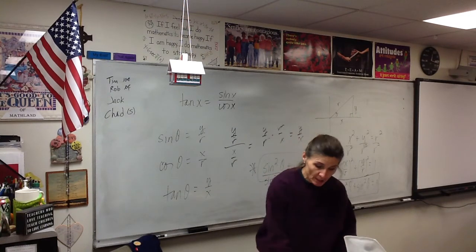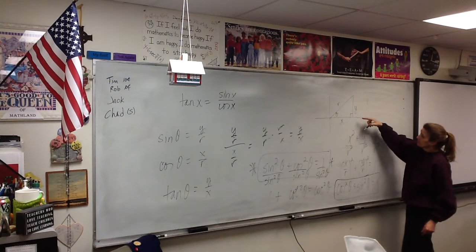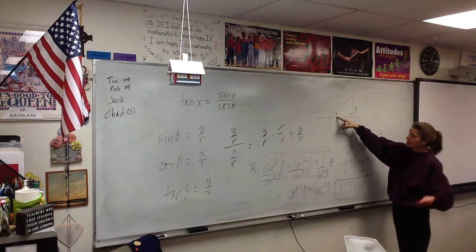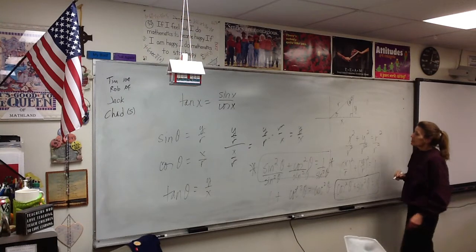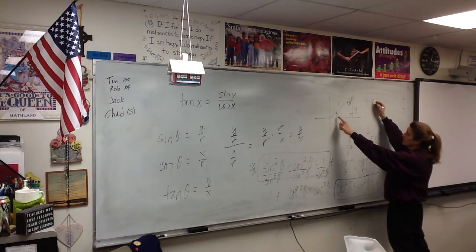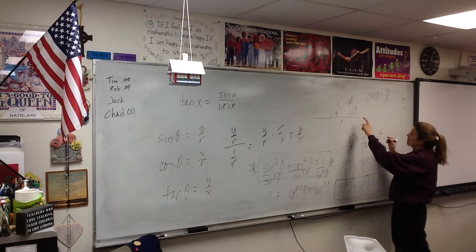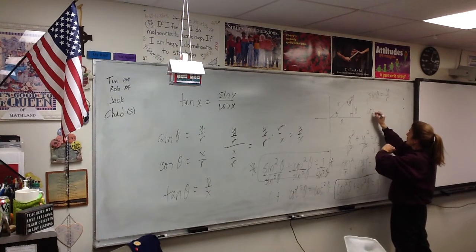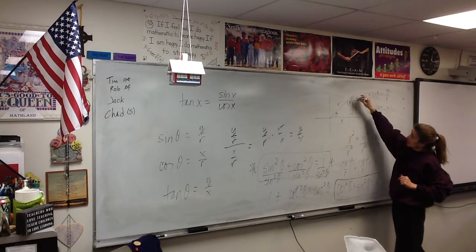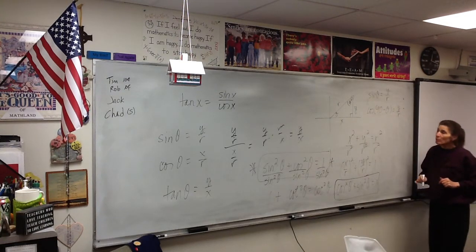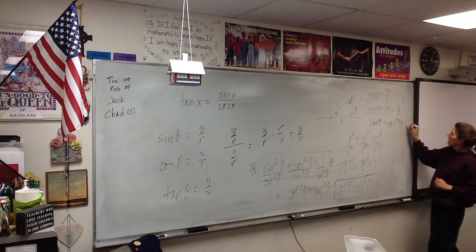The cofunction identities — let's come back and take a look at this picture. In a right triangle, would you agree that this angle would be 90 minus theta? Because these two have to add up to 90. So if I look at this triangle, I can say that the sine of theta is y over r. But look at this angle: the cosine of 90 minus theta is also y over r. In other words, the sine of an angle is equal to the cosine of its complement.